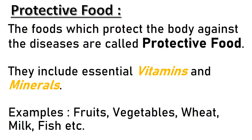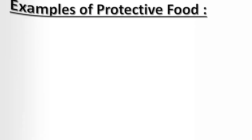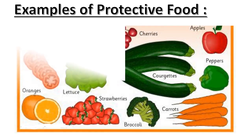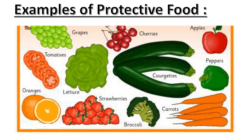Protective food: the foods which protect the body against diseases are called protective food. They include essential vitamins and minerals. Examples: fruits, vegetables, wheat, milk, fish, etc. Basically, a tray of salad that includes fresh fruits and vegetables is a good example of protective food.